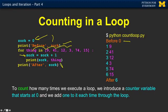Each time through the loop we're going to add one to zork — increment is another word for this — zork equals zork plus one. We print out the thing we're looking at and the current value for zork. So the first time through nine — that's the first thing we saw — 41, the second. Each time this goes up by one. It doesn't really matter what these things are, but we run this many times.